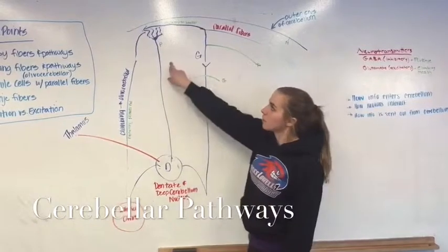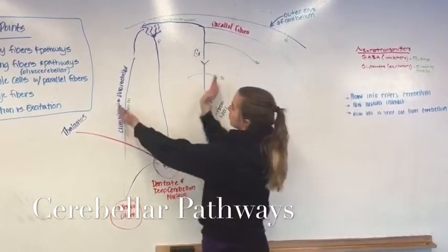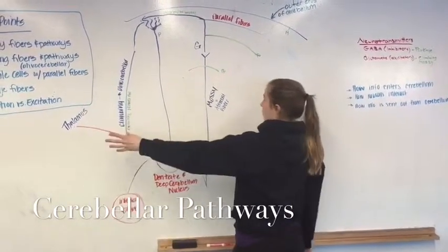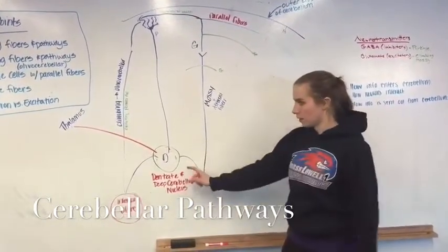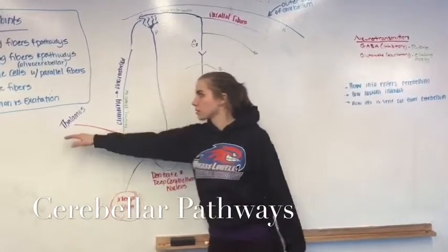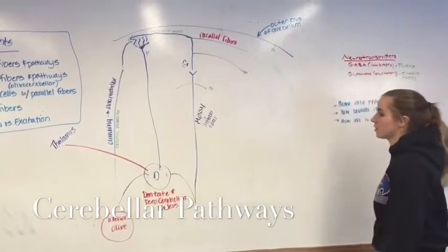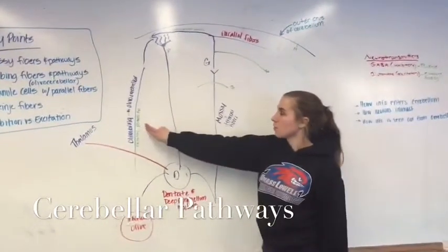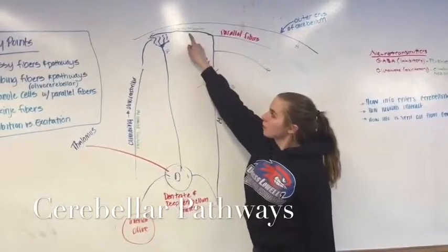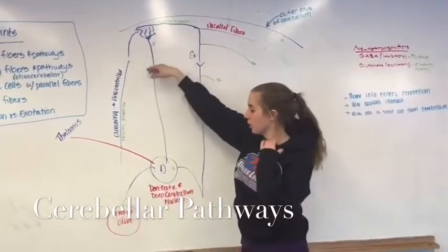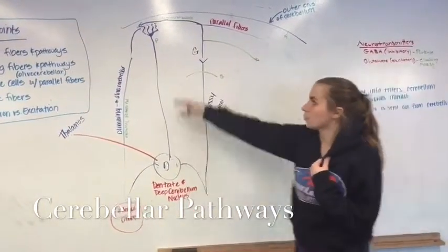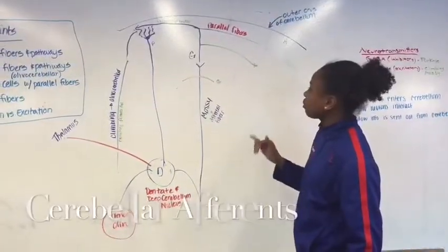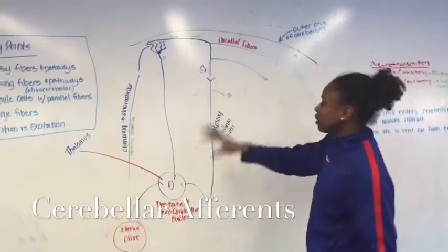The Purkinje cells are inhibitory, so what happens is these two excite, and then the Purkinje cells will inhibit messages from going out of the cerebellum. From the cerebellum coming out, these are the efferent tracks leaving. The olivocerebellar is more powerful, and the granule parallel fibers to the Purkinje are a little weaker. Purkinje will then inhibit the dentate nucleus.